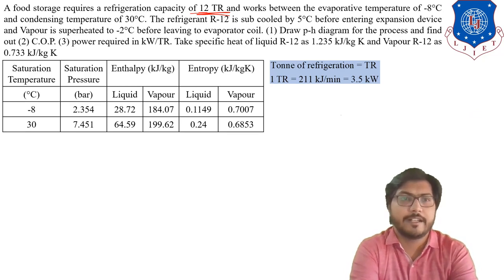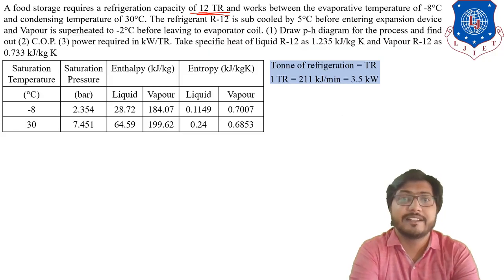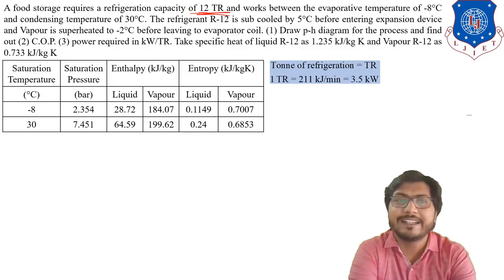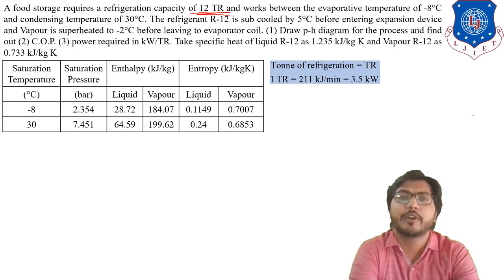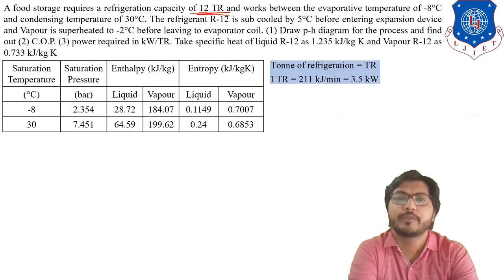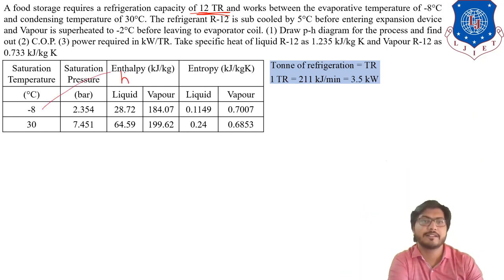From the given saturation table, at minus 8 degrees evaporating temperature: the enthalpy of liquid Hf = 28.72 kJ/kg, enthalpy of vapor Hg = 184.07 kJ/kg, entropy of liquid Sf = 0.1149 kJ/kg·K, and entropy of vapor Sg = 0.7007 kJ/kg·K. Similarly, at 30 degrees condensing temperature, the corresponding values for Hf, Hg, Sf, and Sg are also noted from the table.